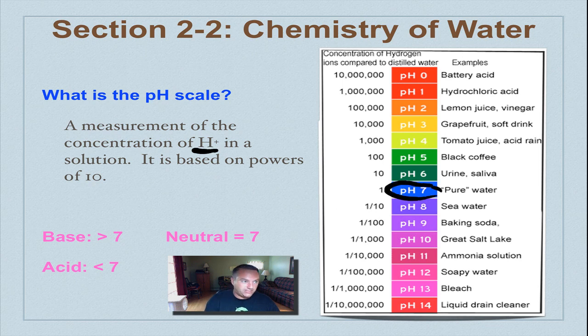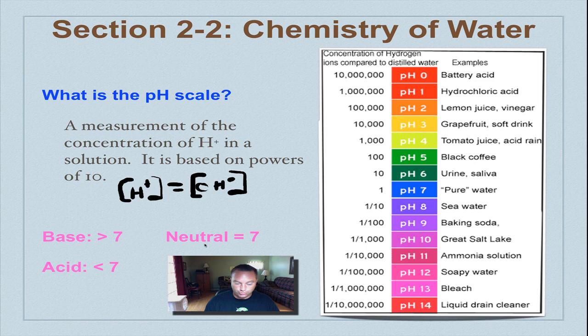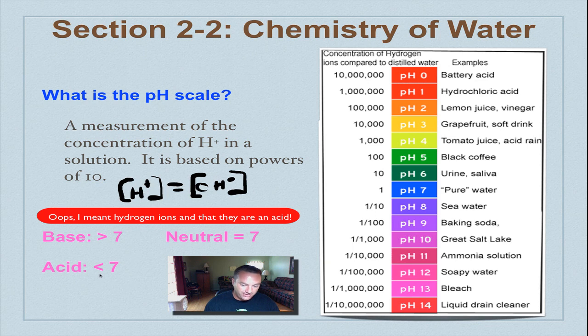That pH of 7 is neutral. Things are neutral when the hydrogen ion concentration is equal to the concentration of the hydroxide ion. So when those two things happen, you're neutral, pH of 7. When you have more hydroxide ions, then you're a base.